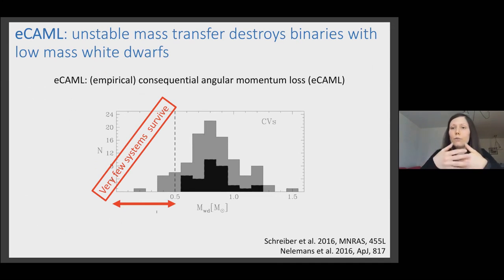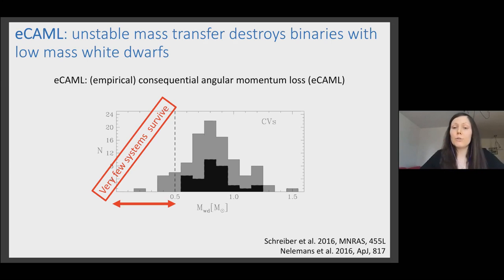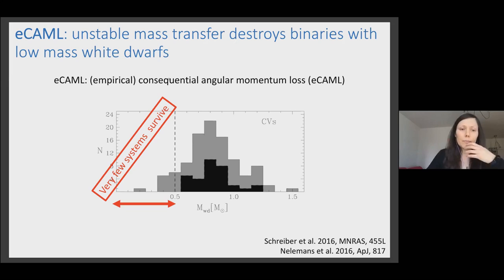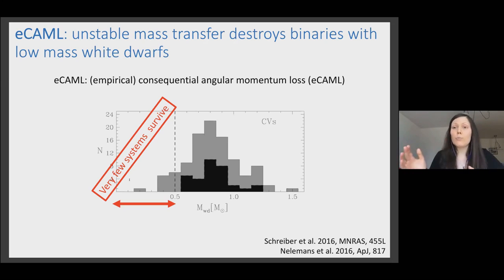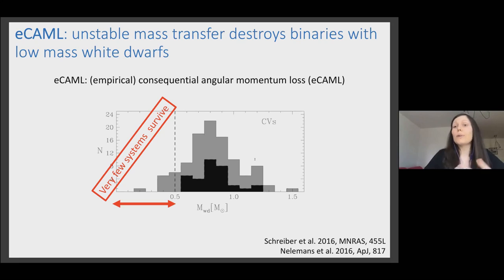There are also alternative explanations which do not require invoking mass growth. These prescriptions were introduced a few years ago by Matthias and also by Nelemans et al. The idea is that CVs hosting low-mass white dwarfs are dynamically unstable. In particular, in the ECOM prescription — empirical consequential angular momentum loss — there is a consequential angular momentum loss arising from the mass transfer process itself, and it is more efficient the lower the mass of the white dwarf. In this scenario, the white dwarf would merge with its companion star, become a single object, and disappear from the population, so very few systems survive in this mass range. In this way you can naturally explain the mass distribution of CVs.